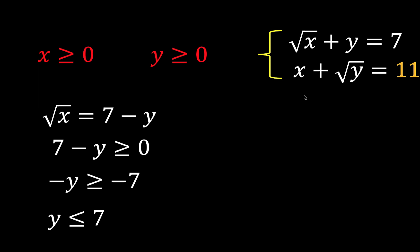Now, using the second equation, x plus square root of y equals 11, we can represent the square root of y to be equal to 11 minus x. Since y is greater than or equal to 0, it follows that 11 minus x must also be greater than or equal to 0. And solving for x, we have x less than or equal to 11.